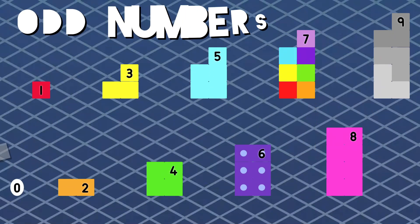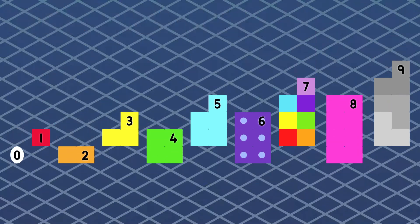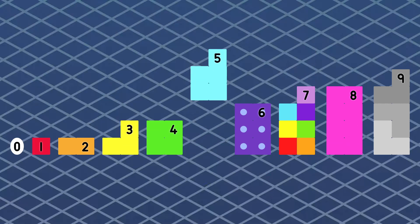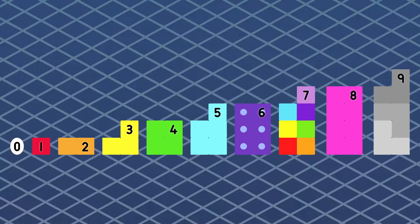We're the odd and even numbers and we're here to show you the difference between us and are we divisible by 2. The odd numbers are 1, 3, 5, 7, 9. The even numbers are 0,